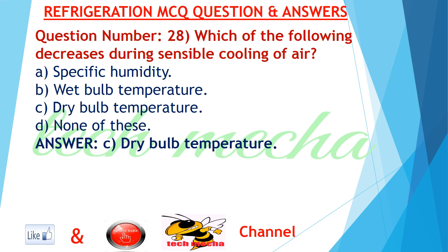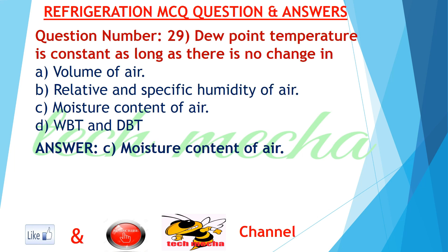Question number 28: Which of the following decreases during sensible cooling of air? A. specific humidity, B. wet bulb temperature, C. dry bulb temperature, D. none of these. Answer: C. dry bulb temperature.